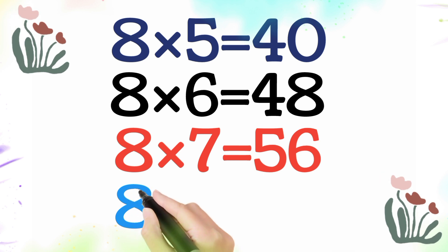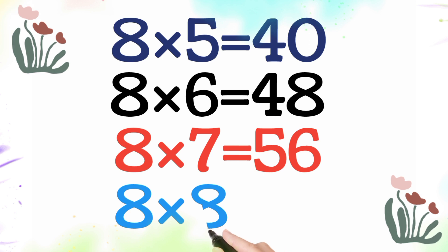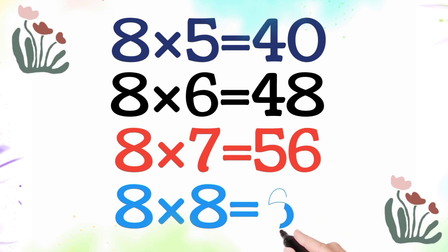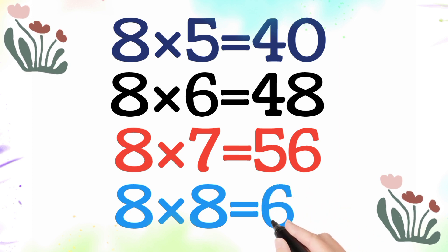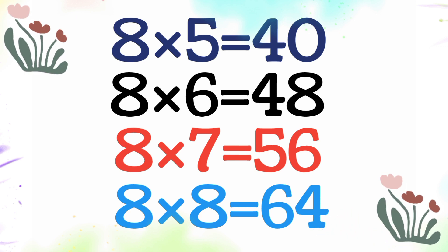8 multiplied by 8 is equal 64. So 8 times 8 is 64.